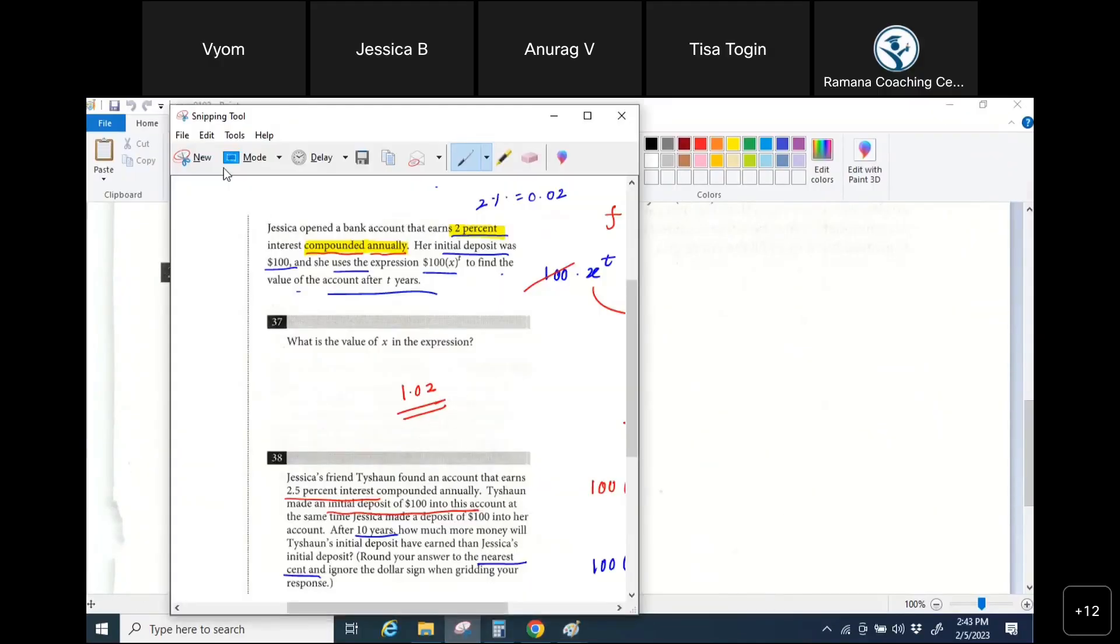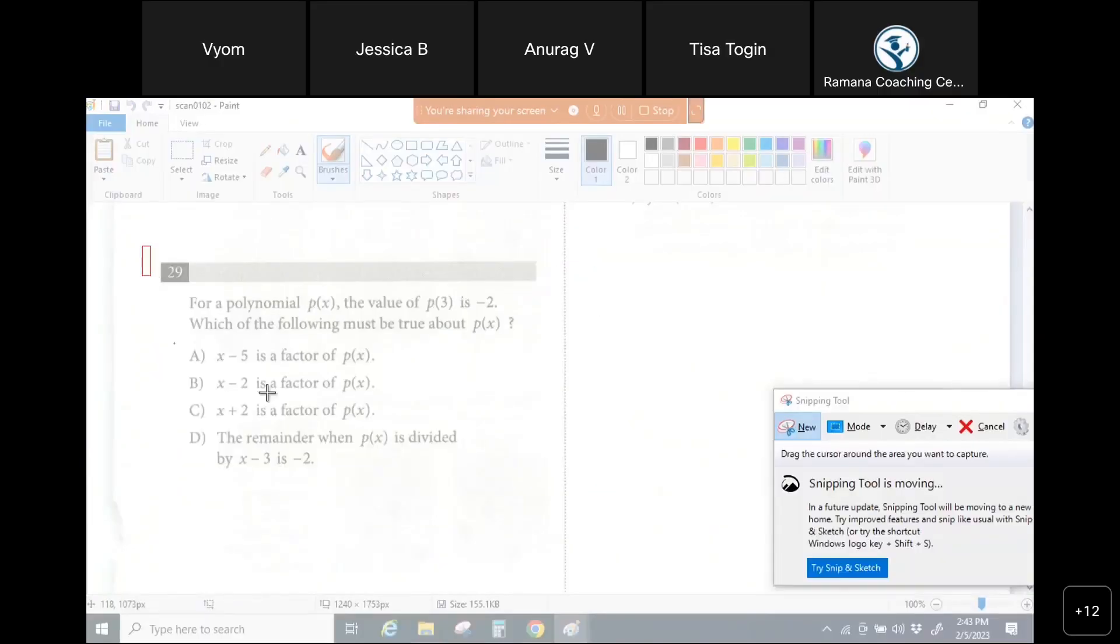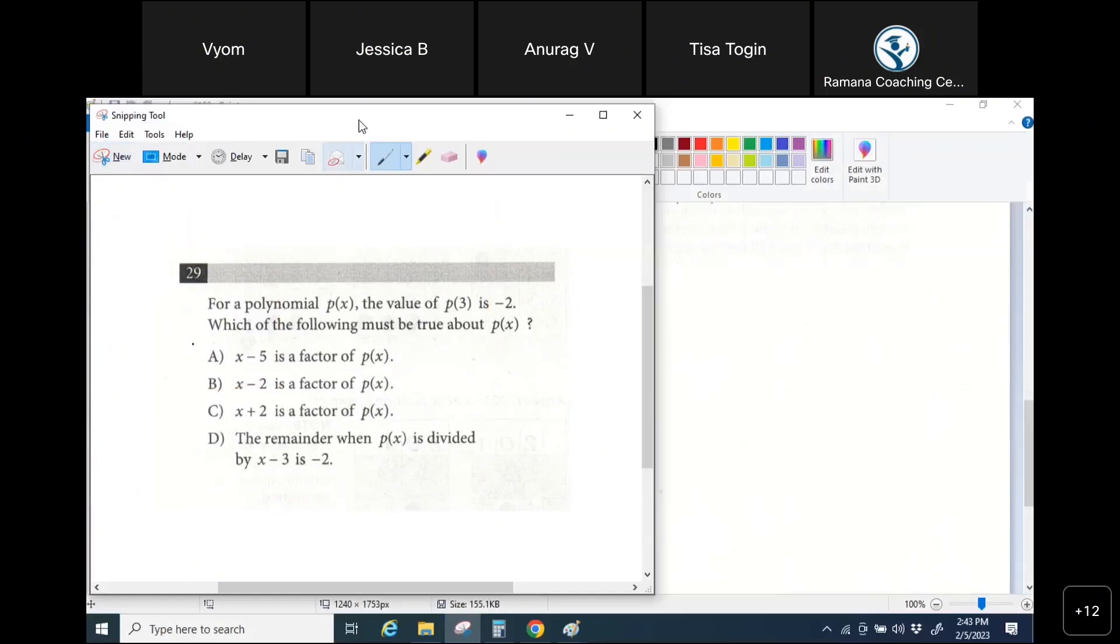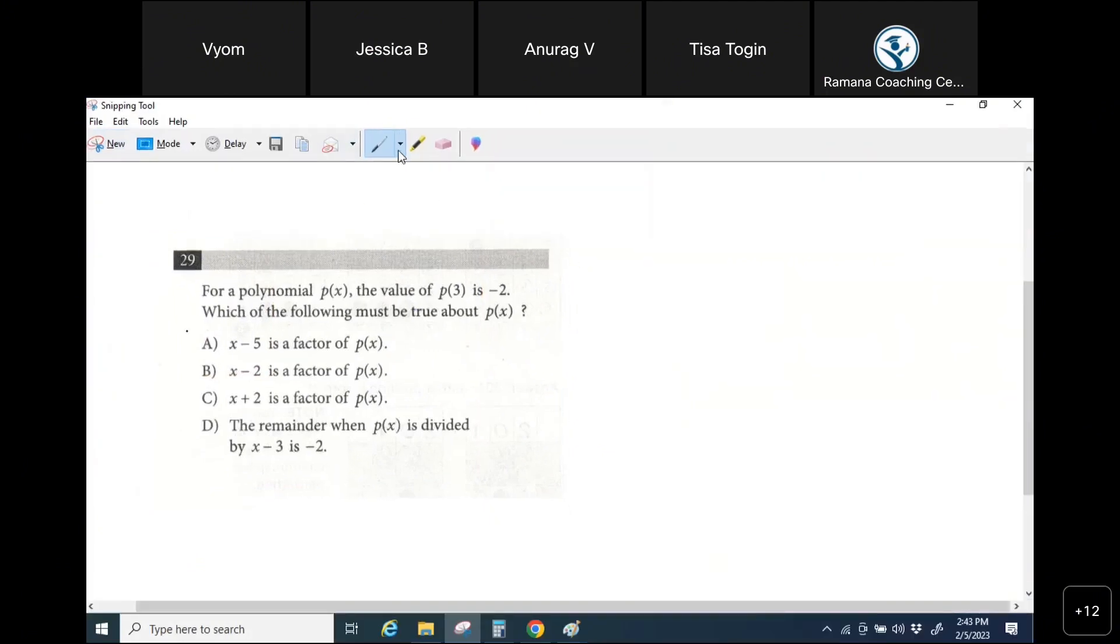Yeah, 29 is basically a remainder theorem. Okay, let me give you an example and you will understand. Let's say your p of x is x squared minus 5x plus 6.